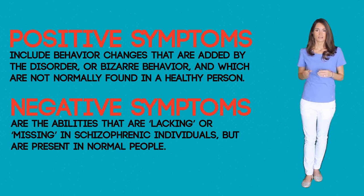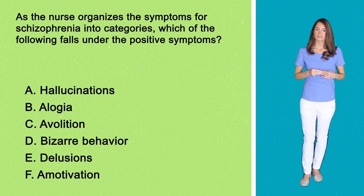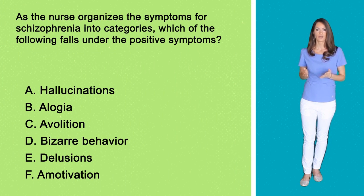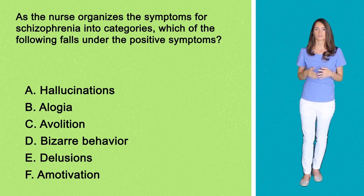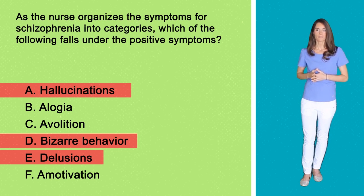Not mentioned here are cognitive symptoms — these are problems relating to memory and concentration. So after reviewing the negative and positive categories for schizophrenia, you should discern the correct answers as A, D, and E, since these are considered positive symptoms in schizophrenic clients.